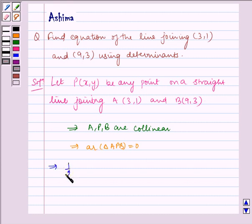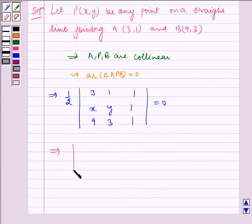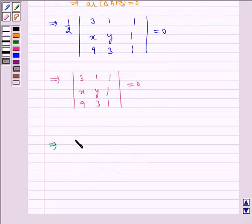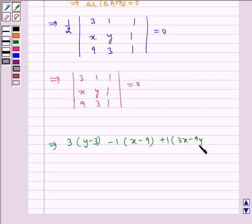Which implies 1/2 times the determinant |3, 1, 1; x, y, 1; 9, 3, 1| equals 0. Which implies |3, 1, 1; x, y, 1; 9, 3, 1| equals 0. Which implies 3(y-3) - 1(x-9) + 1(3x-9y) = 0.